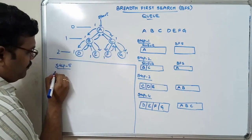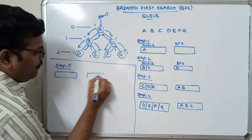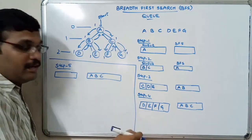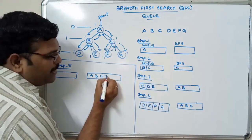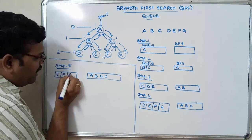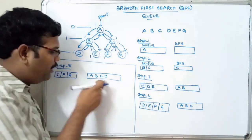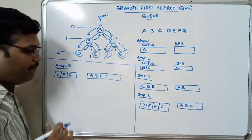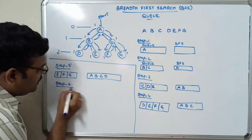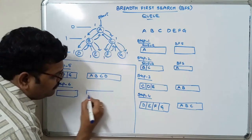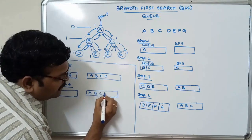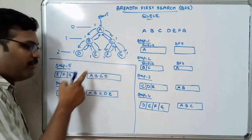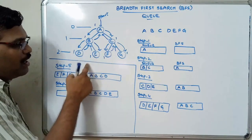Step five: A, B, C are already in BFS. Remove the next element — D is deleted from the front end and placed in BFS. There are now three elements in the queue: E, F, and G. D is a leaf node and has no adjacent nodes, so just ignore and continue. Step six: remove E from the front end. E is removed and we insert all adjacent nodes of E into the queue. E has no adjacent nodes, so ignore. There are only two elements left in the queue.